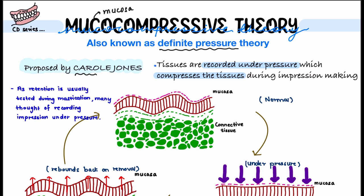This theory was proposed by Carol Jones. In this, we record the tissue under pressure, which compresses the tissue during impression making. The reason is that denture retention is tested during mastication. Many dentists considered it essential for the tissues to remain in contact with the denture during mastication, so they thought to record the impression under pressure in the same manner as chewing forces, to improve retention — which was the major drawback of mucostatic theory.